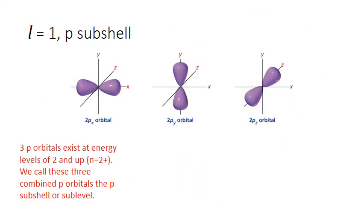Next, let's look at the shape associated with the P orbital, or angular momentum quantum number L equals 1. Instead of being a sphere, the standing wave pattern is more of a dumbbell or a three-dimensional figure 8. This shape has some directionality to it that the sphere did not. This figure 8 pattern can be found in orbitals oriented in three different directions — x, y, and z — and different electrons can be found in all three at the same time.